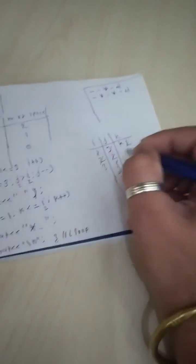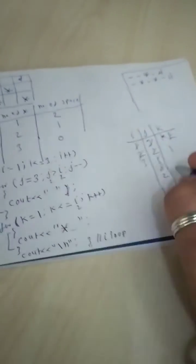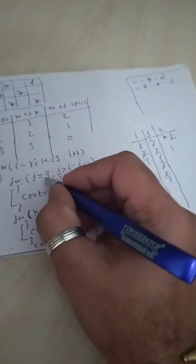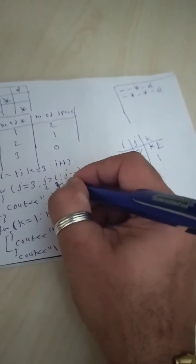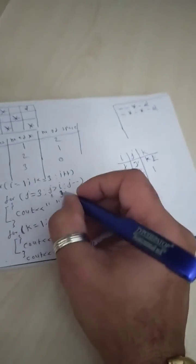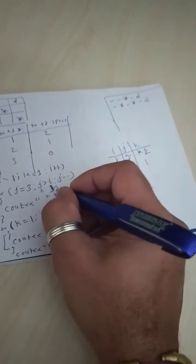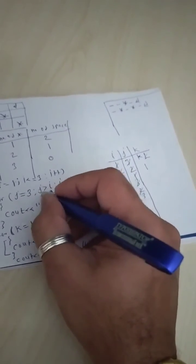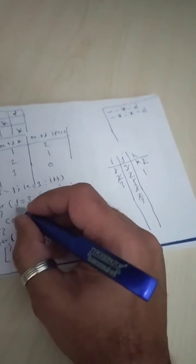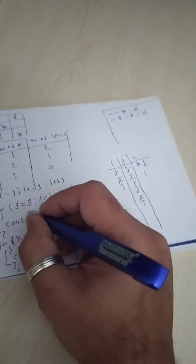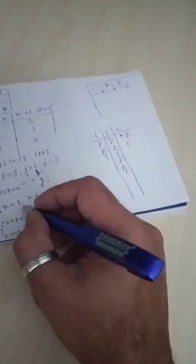i becomes three, so we iterate once more. J restarts at three. Right now i equals three, so J should be greater than three. But J is equal to i, not greater than i — condition false — so the J loop does not execute even a single time. No spaces are printed for line three.